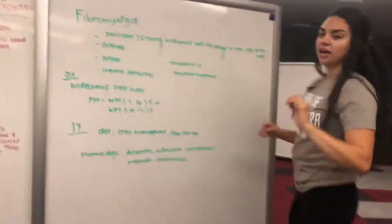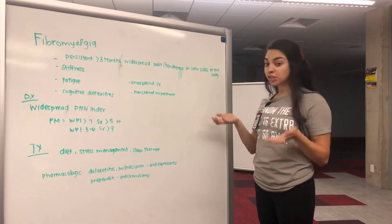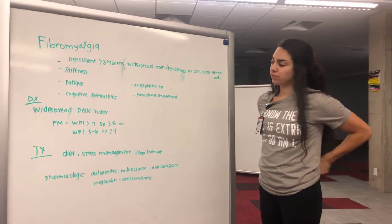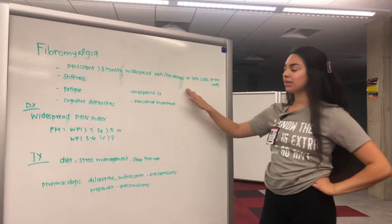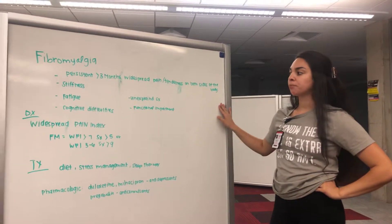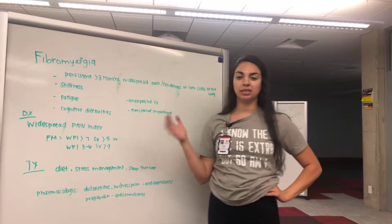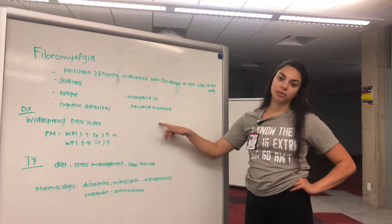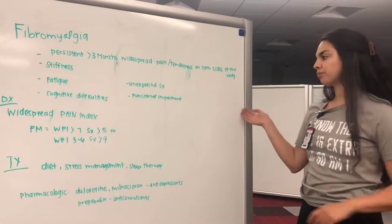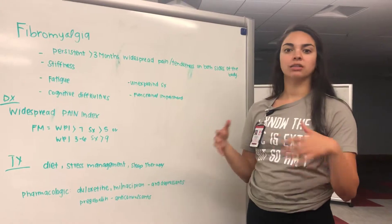Now Veronica is going to go over fibromyalgia. Fibromyalgia was initially thought of as more of a psychiatric condition, but it has evolved since it was first noted. This is a persistent — more than three months — widespread pain and tenderness on both sides of the body. It also includes stiffness, fatigue, cognitive difficulties where patients feel foggy, and lots of unexplained symptoms like depression, anxiety, and functional impairment where individuals aren't performing their normal ADLs.